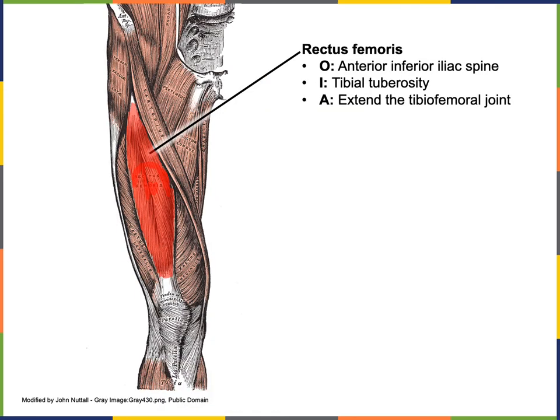The origin of rectus femoris is the anterior inferior iliac spine. The insertion for all the quadriceps femoris muscle group, including rectus femoris, is the tibial tuberosity, and the action includes extension of the tibiofemoral joint. While rectus femoris also crosses the acetabulofemoral joint and can therefore contribute to flexion of the acetabulofemoral joint, the primary action of rectus femoris is extension of the tibiofemoral joint.